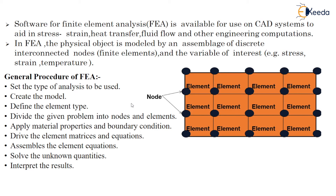The general procedure for FEA is: first, set the type of analysis to be used, whether static, dynamic, periodic, or thermal. Then create the model geometry. Define the element type. Then divide the given problem into nodes and elements. Then apply the material properties and boundary conditions — that means providing Young's modulus, thickness, Poisson's ratio, and sometimes density as material properties. Boundary conditions, for example with a cantilever beam, one end is fixed and the other end has a force applied.